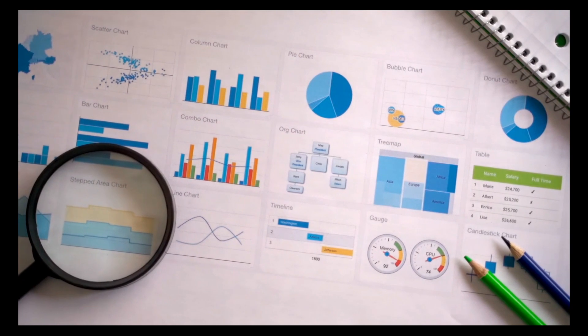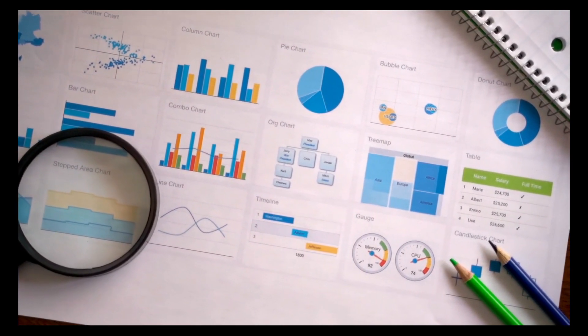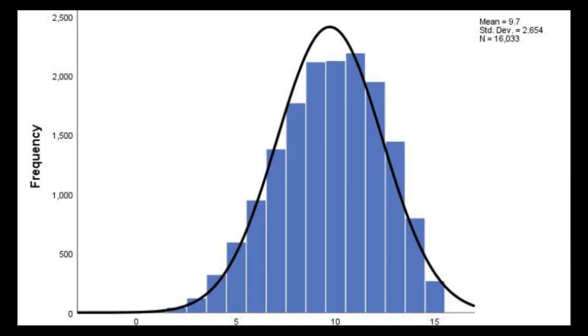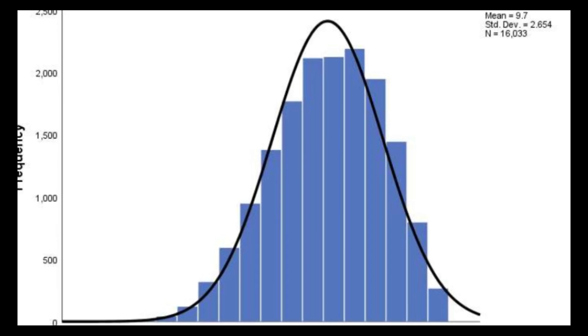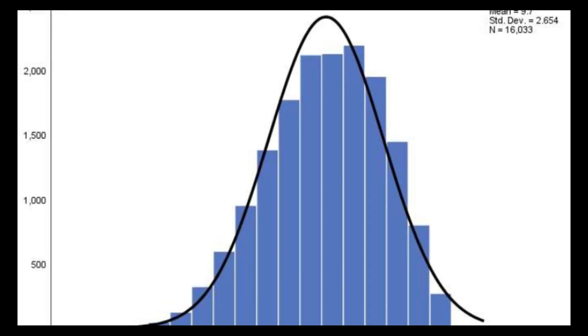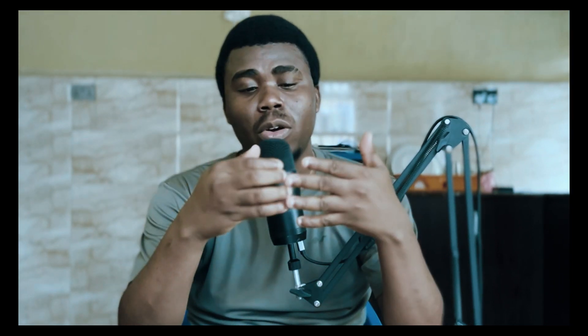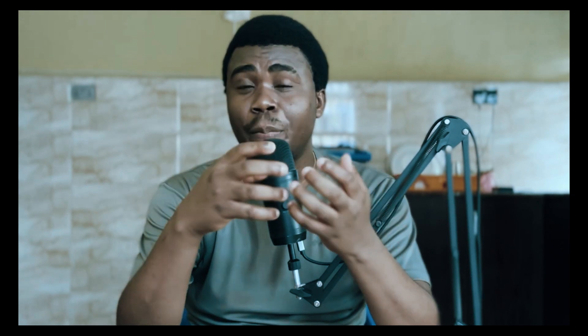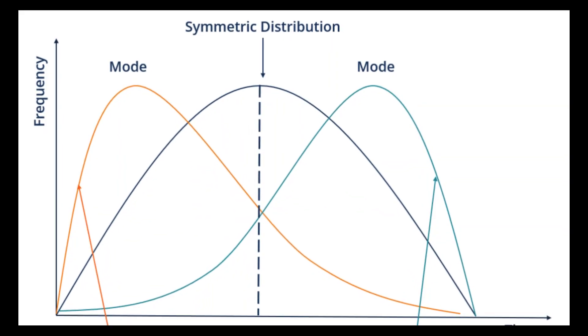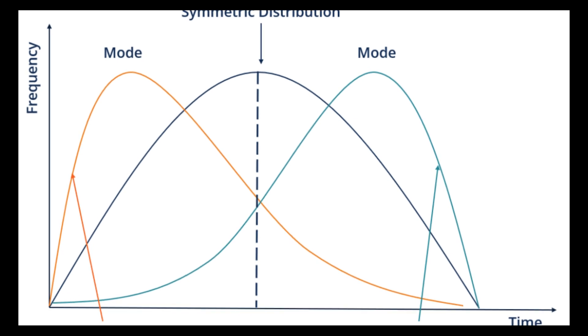There are several tools we can use to visualize the frequency distribution of a data set, but the best is the histogram. When you plot the histogram for a continuous data set, you tend to see the shape of the distribution. This is the beauty of a frequency distribution — it is one of its distinct properties: it allows us to actually see the shape that defines that distribution and that data set.